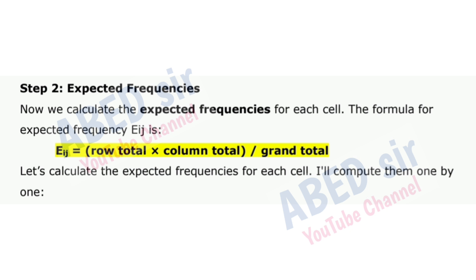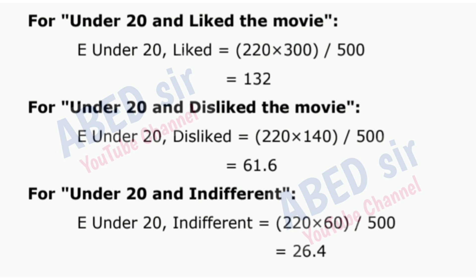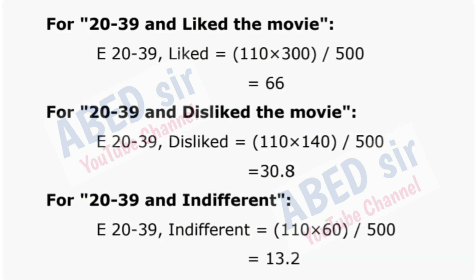I'll compute them one by one. For under 20 and liked the movie: E = 132. For under 20 and disliked the movie: E = 61.6. For under 20 and indifferent: E = 26.4. For 20 to 39 and liked the movie: E = 66. For 20 to 39 and disliked the movie: E = 30.8. For 20 to 39 and indifferent: E = 13.2.